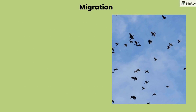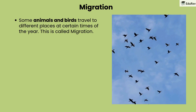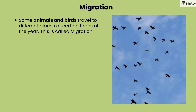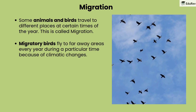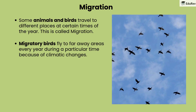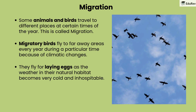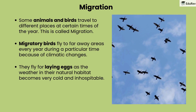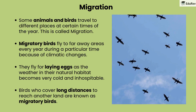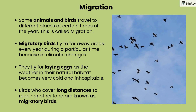Let's understand the term migration. Some animals and birds travel to different places at certain times of the year — this is called migration. Migratory birds fly to far-away areas every year during a particular time because of climatic changes. They fly for laying eggs, as the weather in their natural habitat becomes very cold and inhospitable. Birds that cover long distances to reach another land are known as migratory birds.